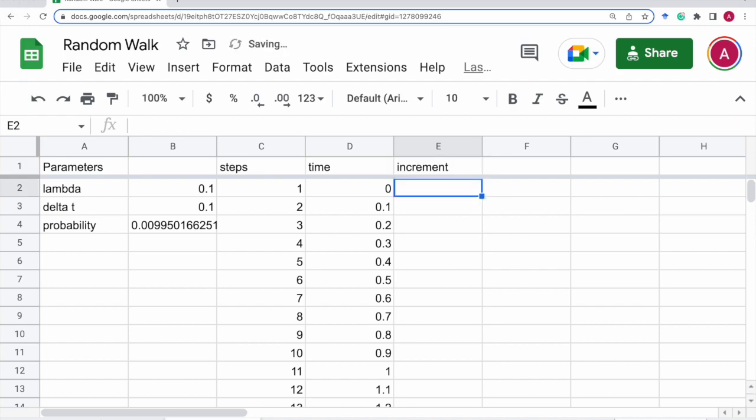For time 0, we don't need anything. And for this, if random number, so this rand function gives a random number between 0 and 1. If this is less than the probability, then increment by 1. Otherwise, do not increment. So it's 0.